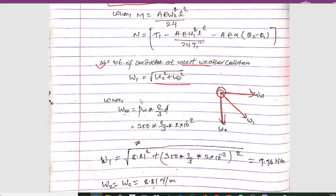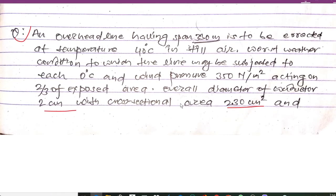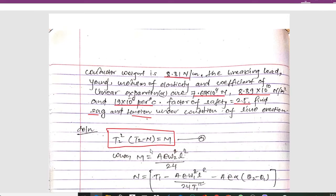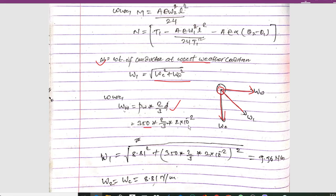To calculate the wind weight, we have: ww = pw × (2/3) × d. Here pw is given as 350 Newton per meter square, acting on two-thirds of the exposed area. The value of d is the overall diameter of the conductor, which is 2 centimeters = 2 × 10⁻² meters. Substituting: ww = 350 × (2/3) × 2 × 10⁻².